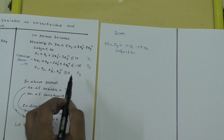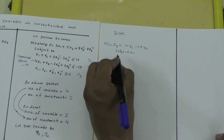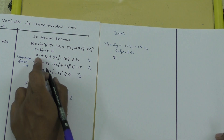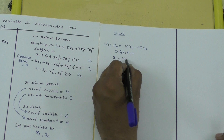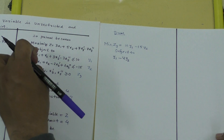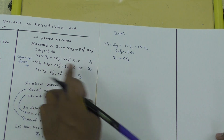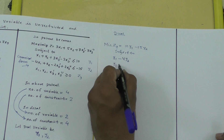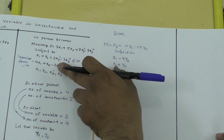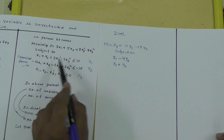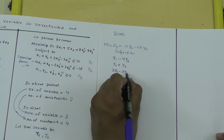To build the dual constraints, for the first column (x1): 1 times y1 gives y1, and from the second constraint column for x1: minus 4 times y2 gives minus 4y2. For the second column (x2): 1 times y1 and 1 times y2. The columns of the primal coefficient matrix are written as rows in the dual constraints.